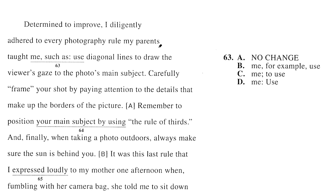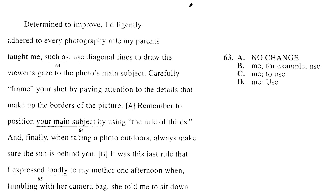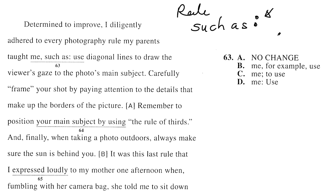Next question. 'Determined to improve, I diligently adhered to every photography rule my parents taught me, such as: use diagonal lines to draw the viewer's gaze to the photo's main subject.' Rule number one: never put 'such as' and then put a colon. This is really sloppy. So I know that A is wrong. A colon is like 'here you go,' and 'such as' is also like 'here you go' — putting both is redundant.